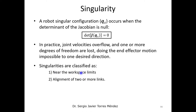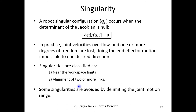These singularities can be classified as occurring when you are very close to the limits of the workspace, or when you align two or more links of the robot. In industrial applications these singularities are very important because you need to reduce or eliminate them from your joint motions.